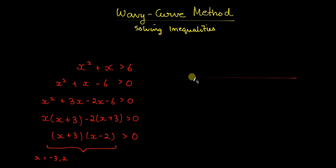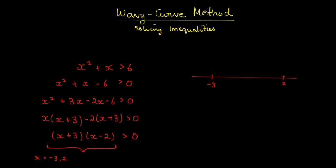From here we draw the wavy curve to find out when this will be true. We draw a number line and plot these numbers in ascending order: minus 3 and 2. In a wavy curve we always start from the top right corner.